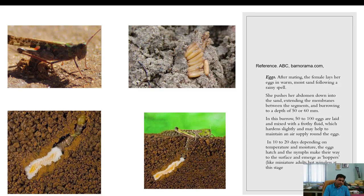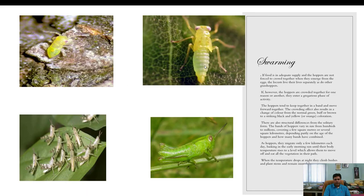After 10 to 20 days, depending on temperature and moisture, the eggs hatch and hoppers emerge. If food is adequate and hoppers are not forced to crowd together, locusts live separately like other grasshoppers. However, if hoppers are crowded together for any reason, they enter the gregarious phase and tend to keep together in a band and move forward collectively.